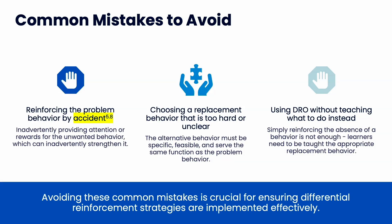Common mistakes during differential reinforcement: accidentally reinforcing the problem behavior by inadvertently providing attention or rewards to unwanted behavior. A good example is reprimand. We think reprimand is a punishment, and many teachers and parents naturally do it. But if the problem behavior is not going down with a reprimand, that reprimand might actually be reinforcing the behavior. Kids like attention, and even negative attention like 'no, don't do that' might be better than nothing. So you might be doing all this DR work with replacement behaviors, but every time you see the problem behavior you reprimand them, inadvertently reinforcing it.